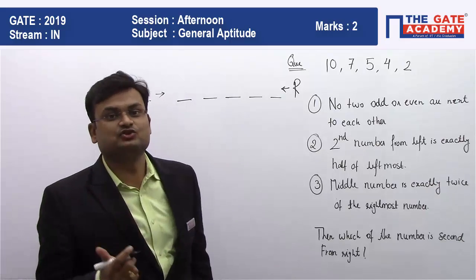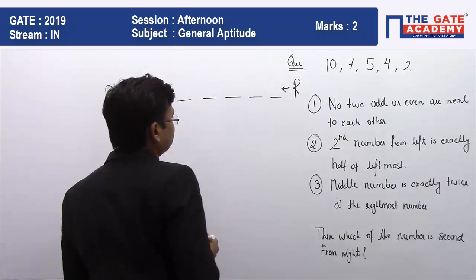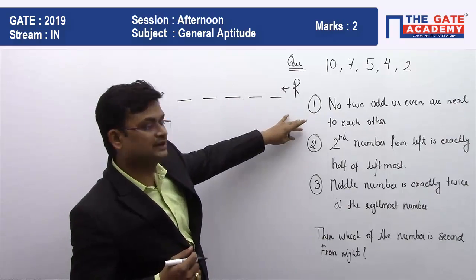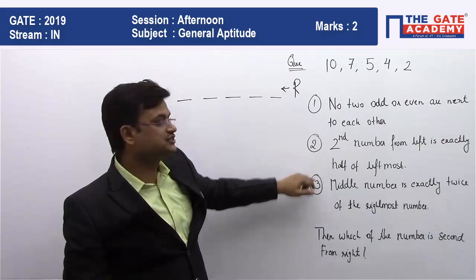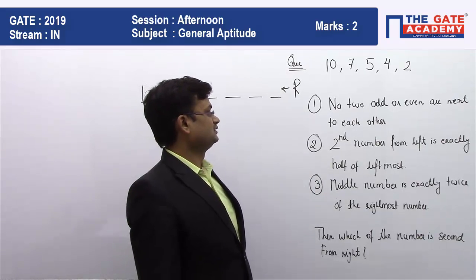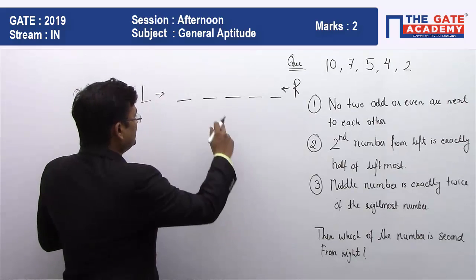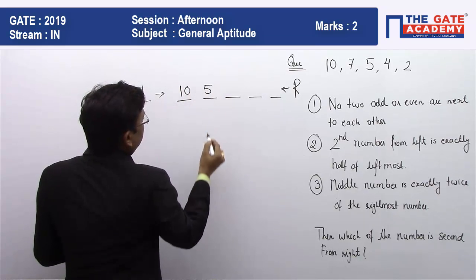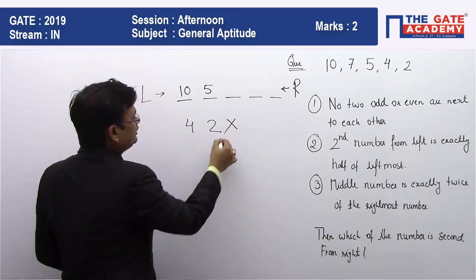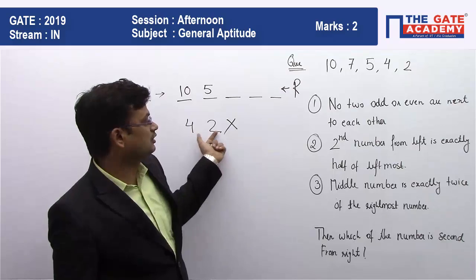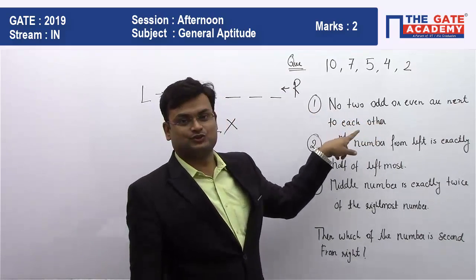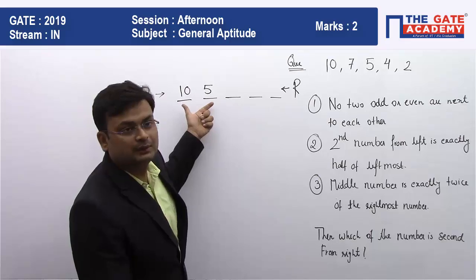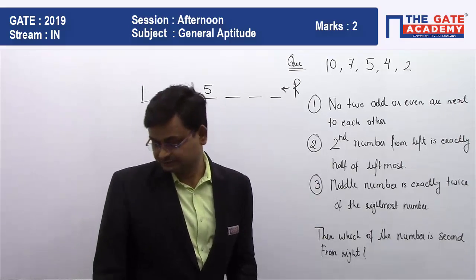Let's set aside the first condition for now and come to the second condition: the second number from left is exactly half of the leftmost. So which pairs work? 10 and 5 — yes. Also 4 and 2, but 4 and 2 we cannot accept because of the first condition — no two even numbers can be next to each other. So we take 10 as leftmost and 5 as second from left.